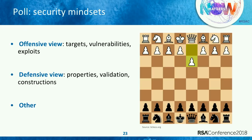For security, I generally like to think of this as a game between two players: an attacker and a defender. With neural networks, the first player trains the network and the second person responds to that trained network. I have two views people generally take with security: the offensive view — thinking of targets, vulnerabilities, and exploits, useful for tearing down systems — and the defensive view, thinking in terms of properties, validation, and constructions, useful for building resilient systems and giving people confidence.